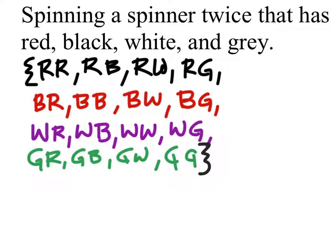Because each one of those colors, whatever we spin on the first one, has four on the second. So we have four groups of four, just as we see in the sample space.